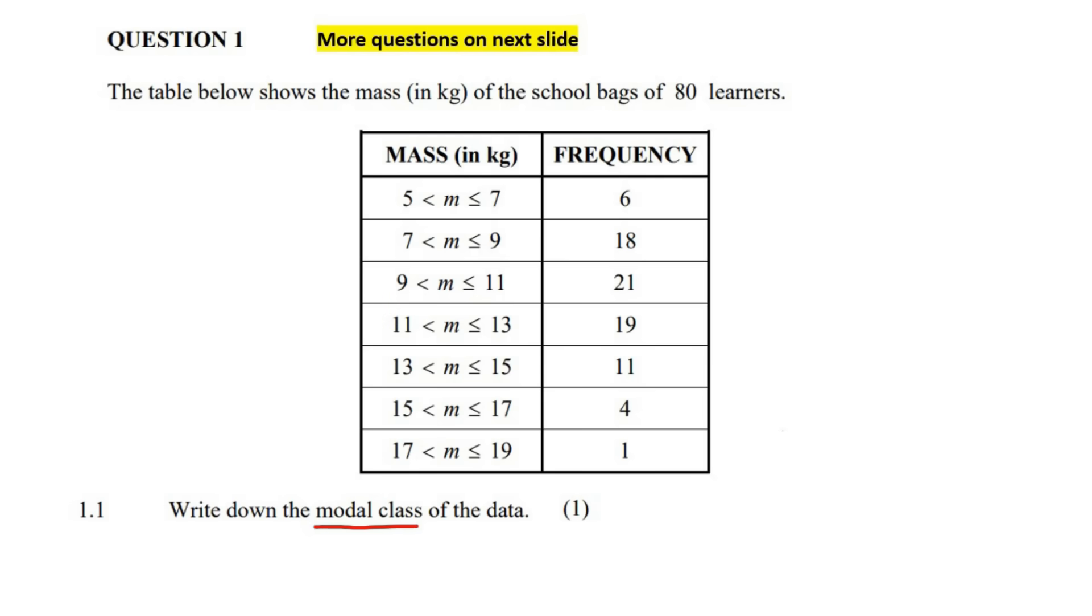So the modal class is the class that has the most people. So if you look at the 9 to 11 kilogram bags, there are 21 learners. So that is the modal class. So we'll say it's the 9 to 11 category. So you just write it exactly as they have it there.